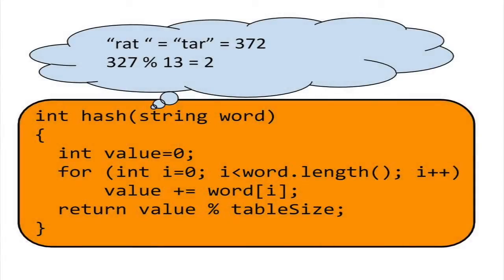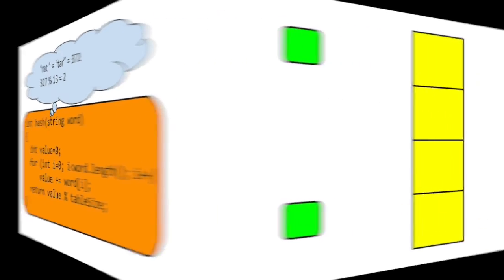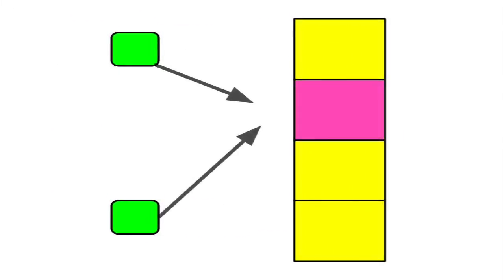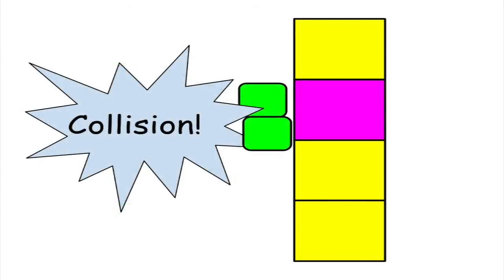Occasionally, different words will generate the same hash function result. For example, the keys tar and rat will both hash to the index too, if there are 13 buckets total in the hash table. When two keys hash to the same index, we get a hash collision.